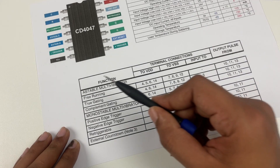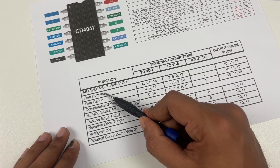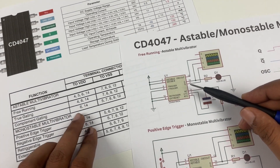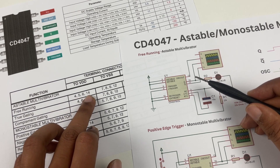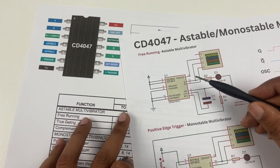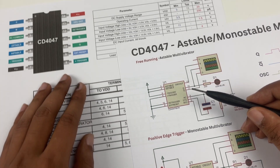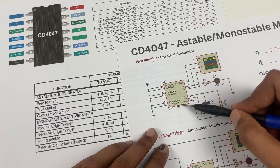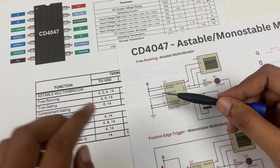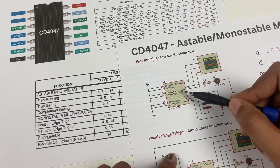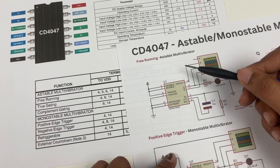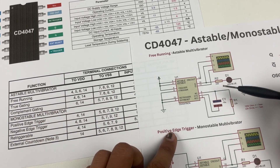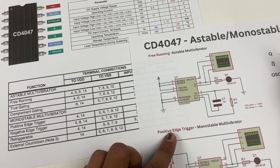Now let's understand how to build an astable multivibrator in free running mode. The connections are shown here. Pins 4, 5, 6, and 14 should be connected to VDD, and pins 7, 8, 9, and 12 should be connected to ground — which is what we have done in the circuit diagram here.